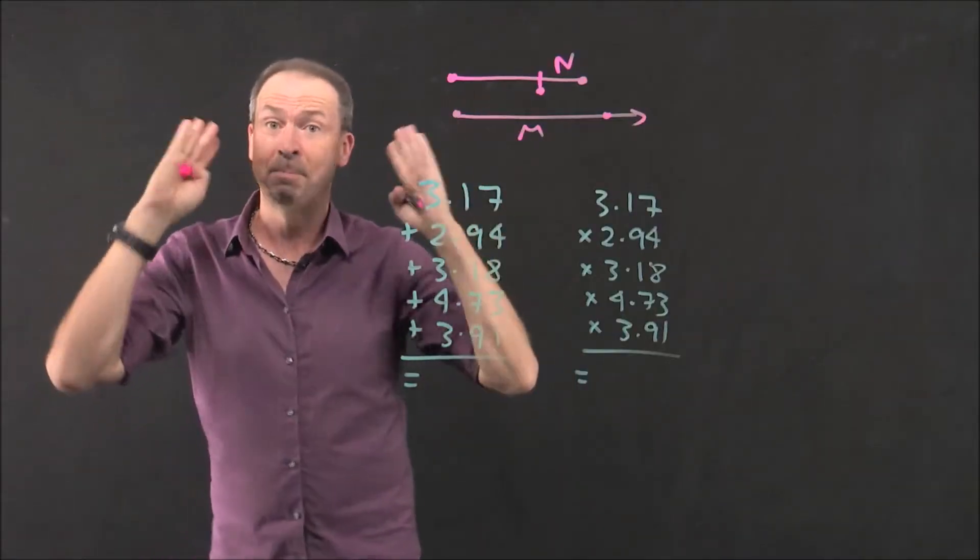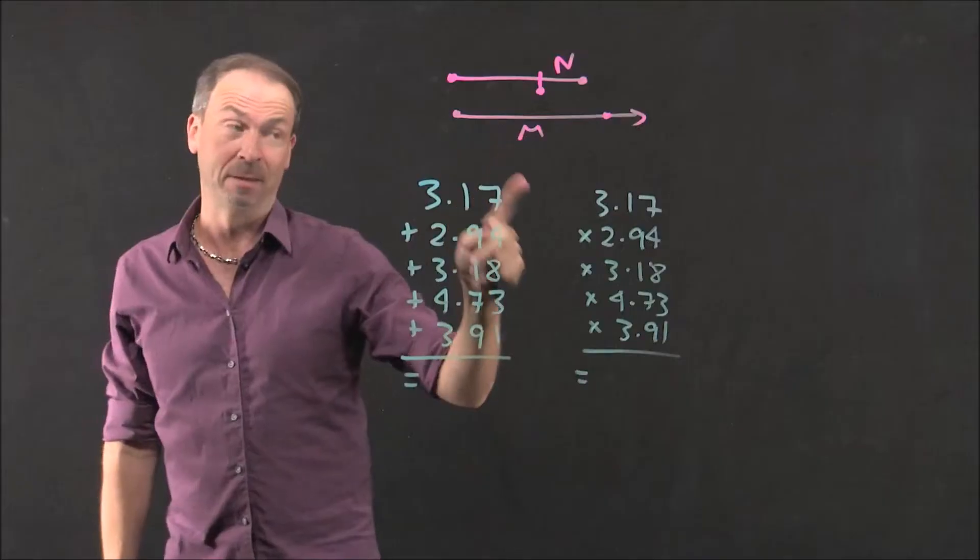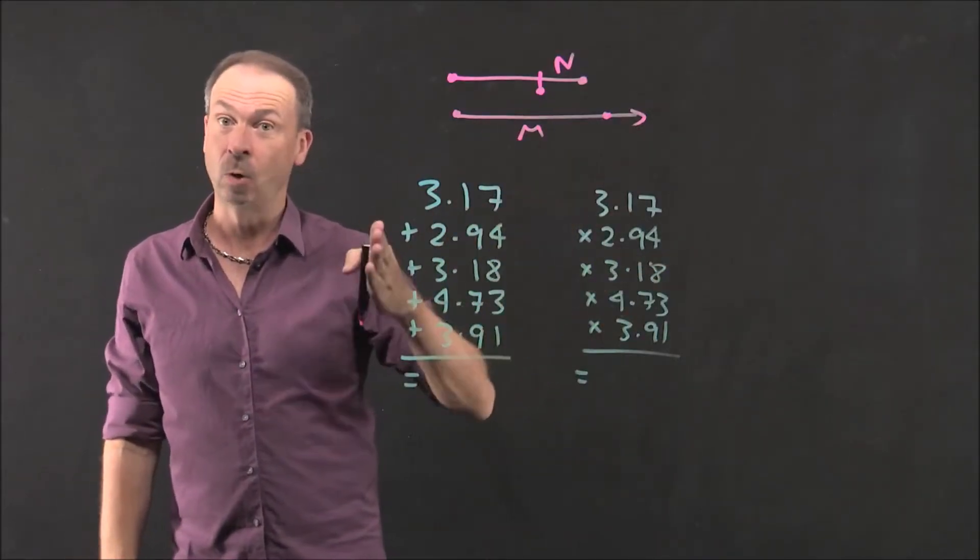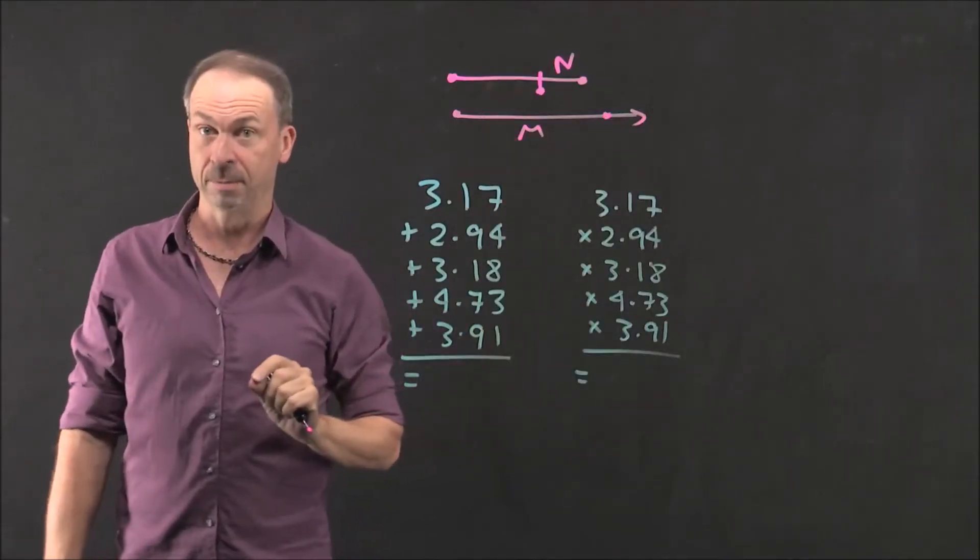So his method was strange, it was bizarre, it was complicated, but he gave it a name that seemed appropriate for his method. Ratios of arithmetic values. Logos, arithmos, logarithms. He called his technique logarithms.